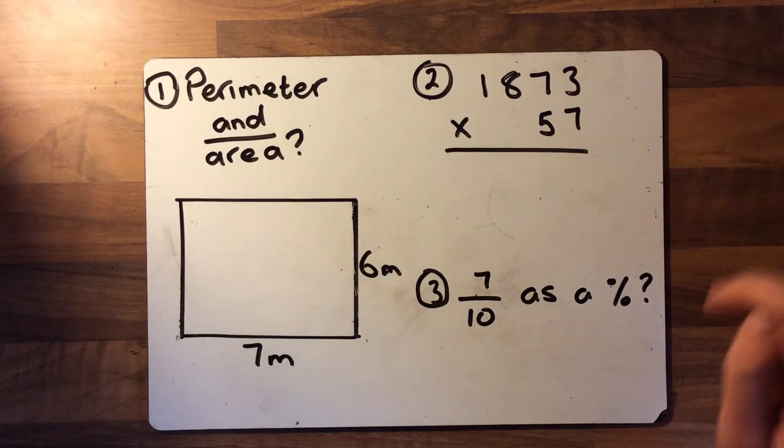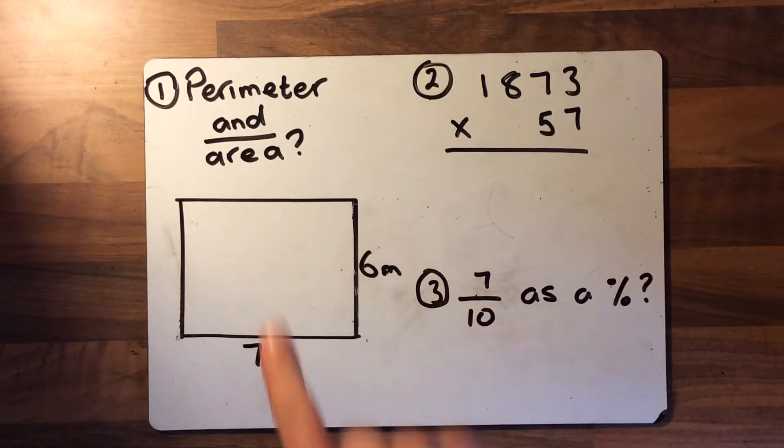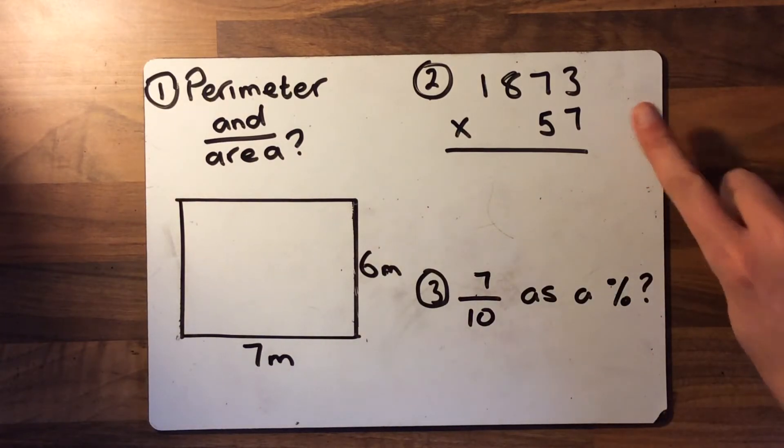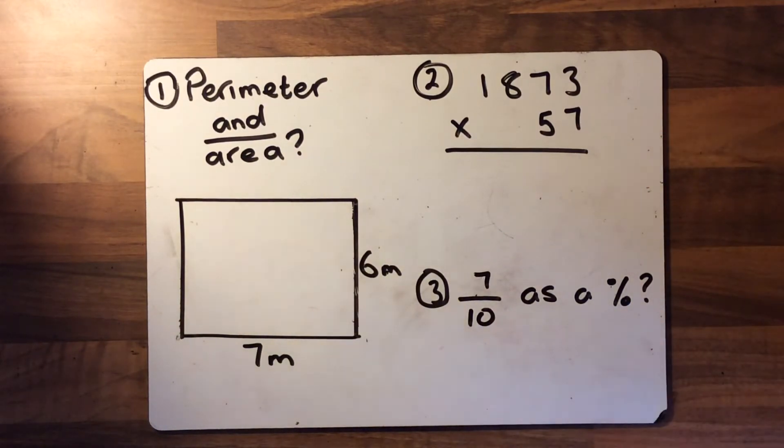you've got a multiplication, a four digit by a two digit. And then number three, you've got seven tenths, what is that as a percentage? So three questions but there are two bits to it for this one. Could you find the perimeter and the area for this one? Find this answer to multiplication and find this fraction as a percentage.